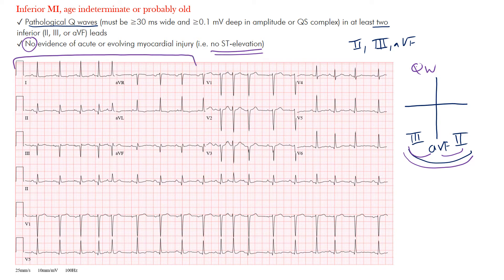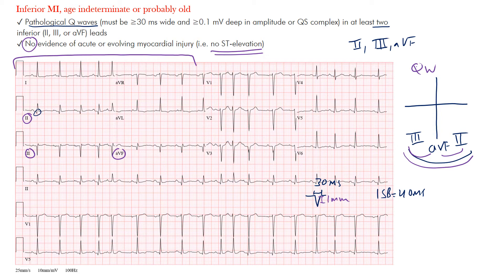Let's look at those inferior limb leads again — leads II, III, and AVF. In lead II, you may see small Q waves that are reaching the criteria. Remember, we want the width of the Q waves to be at least 30 milliseconds — one small box is 40 milliseconds — and the depth should be at least one millimeter. Looking at AVF, you can see these Q waves forming. Notice in lead II there's no ST segment elevation, and no ST elevation in AVF either.